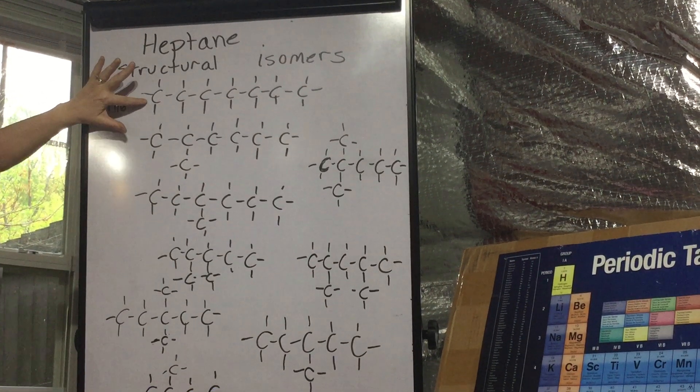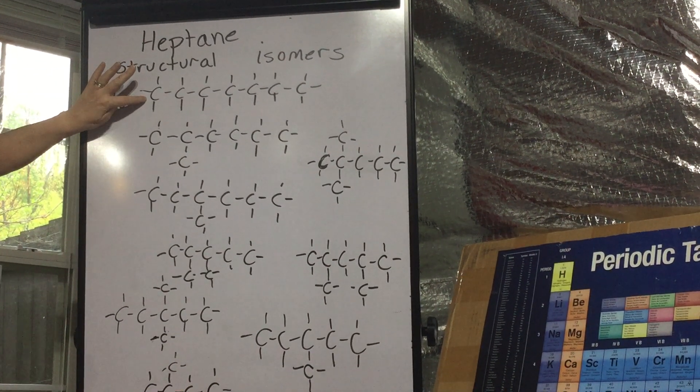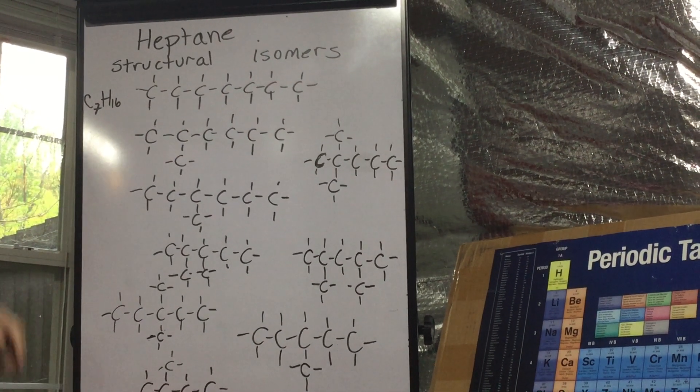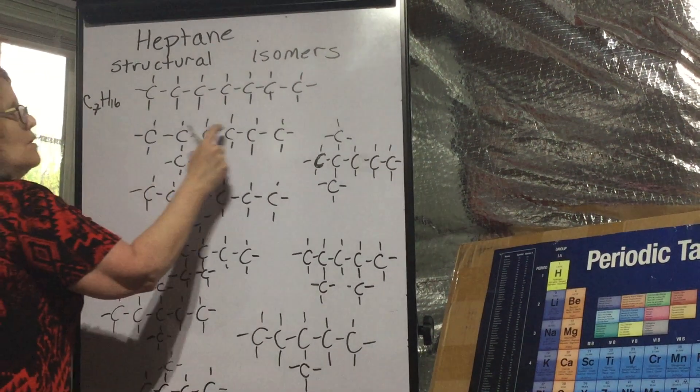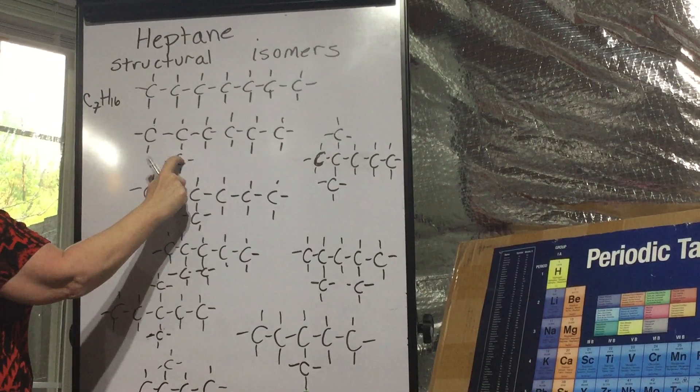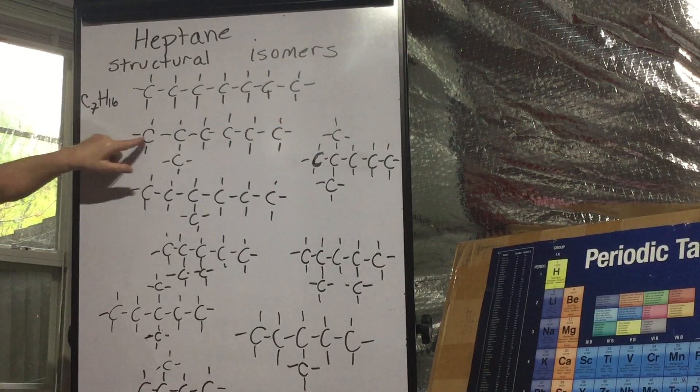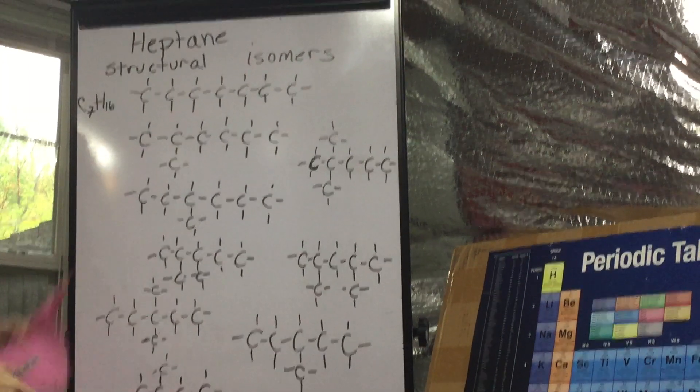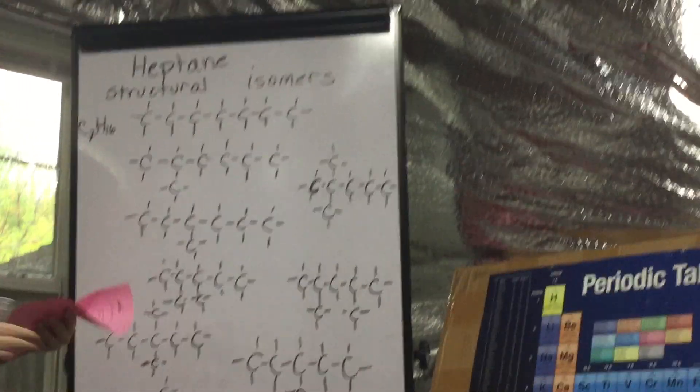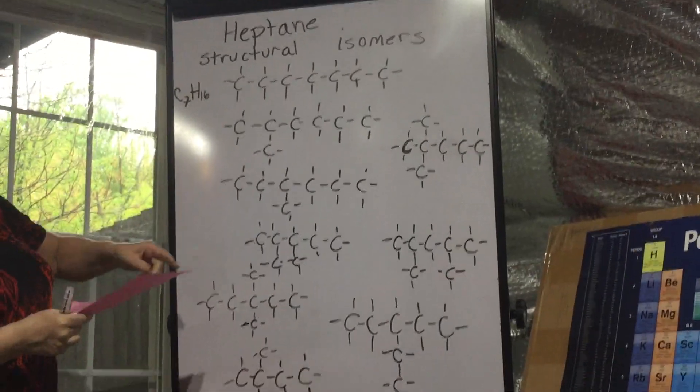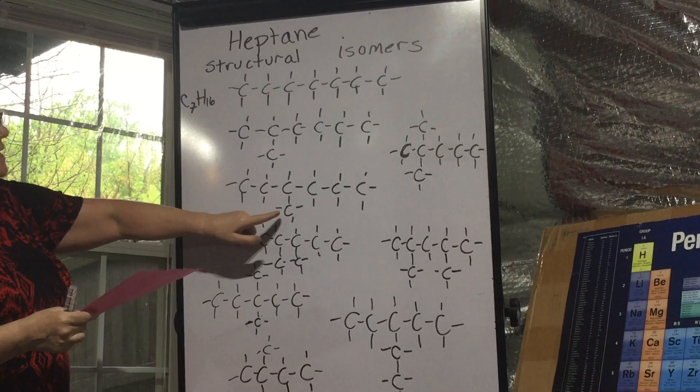Now this is heptane. I can also draw 2-methyl hexane. It has, and you can check it, the same number of carbons and hydrogens. This is 2-methyl hexane.